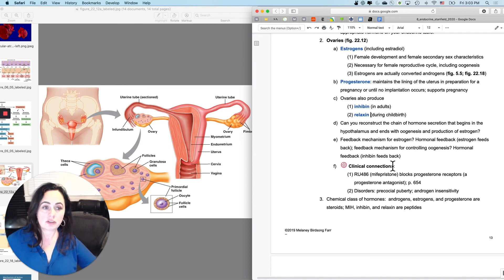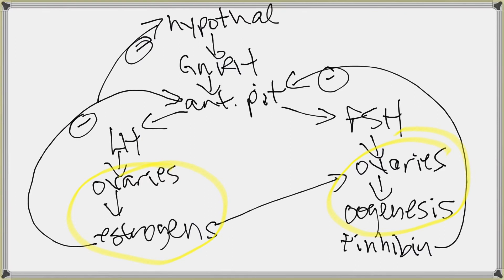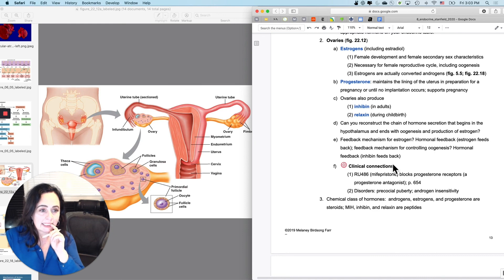Can you reconstruct the chain of hormone secretion that begins with the hypothalamus and ends with oogenesis and estrogen production? You can because we just did. That's what that is. And the feedback mechanism for estrogen, what is feeding back? It's hormones. It's inhibin feeding back to stop oogenesis. And it's actually the estrogens themselves feeding back to stop estrogen secretion. A couple more disorders.